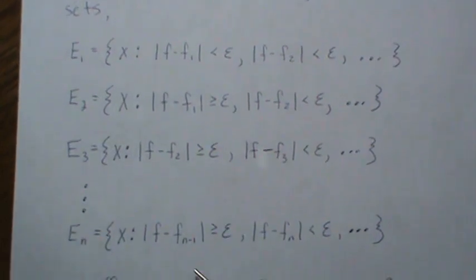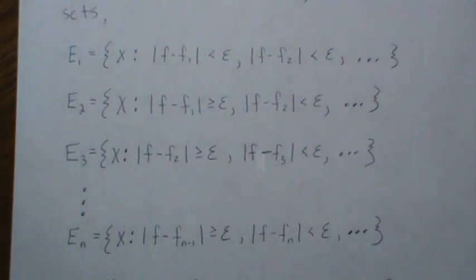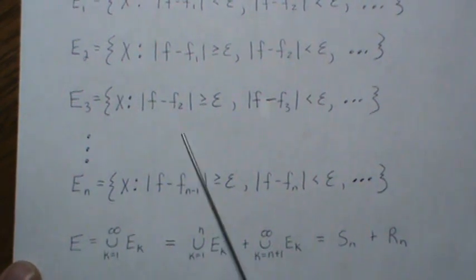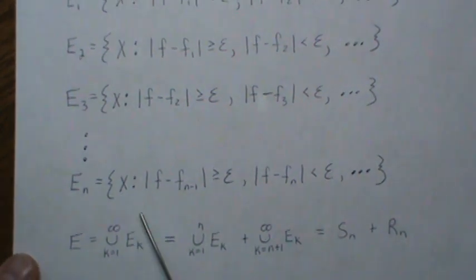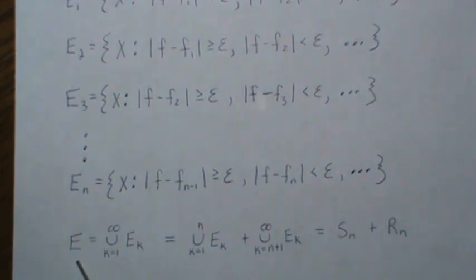So if we repeat this, then E_N equals this relationship here. Now it can be shown that the union of these disjoint intervals or these sets indeed go to E, and since they're disjoint,